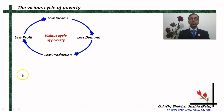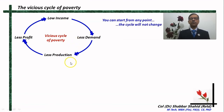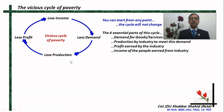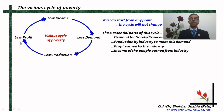You see in front of you — this is that vicious cycle of poverty. It has got four constituents. You can start from any point; the cycle will not change. The four essential constituents are: the demand for goods and services, production by the industry to meet the demand, then profit earned by the industry, and income in the hands of people.